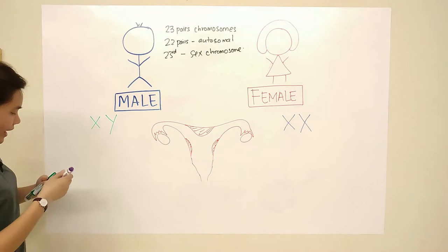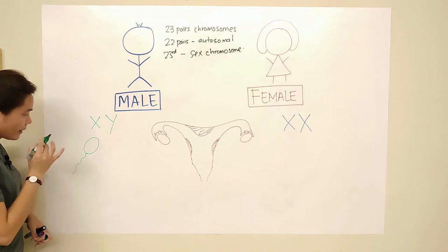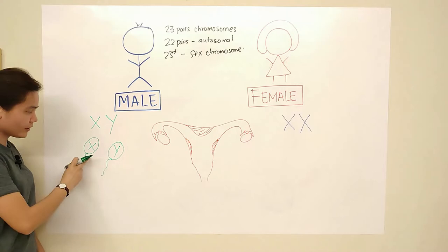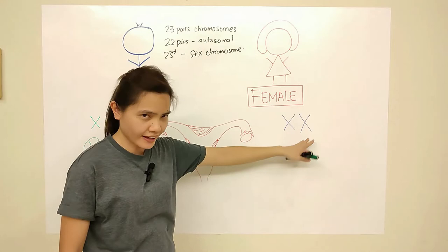The male has XY, so sperm is the gamete. Each sperm — males have millions of sperm — so maybe half of those millions will carry the X chromosome, and the other half will carry the Y chromosome. So they have X and they have Y.